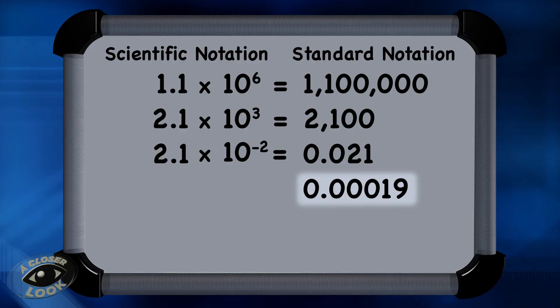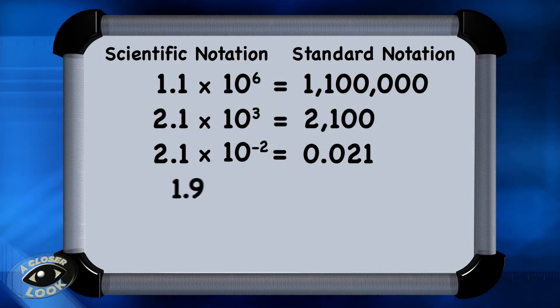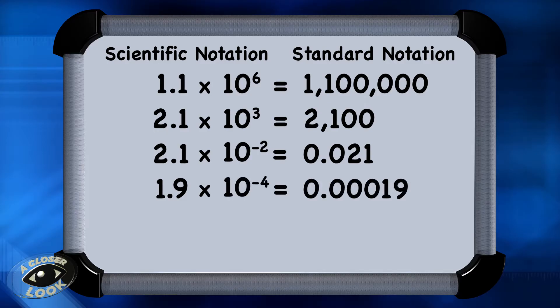Let's try this: 0.00019. To represent this number in scientific notation, move the decimal one, two, three, four places, so that the decimal is behind the 1. So it will be 1.9 times 10 to the minus fourth power. This is representing a number smaller than 1, so the exponent will be negative.